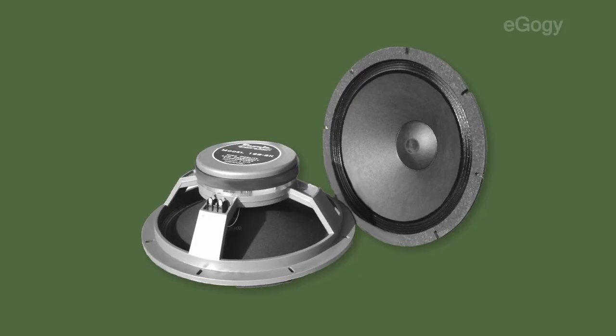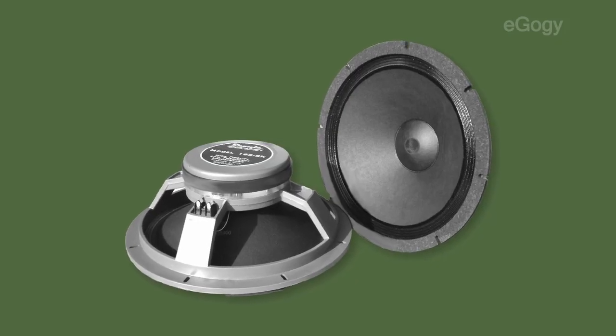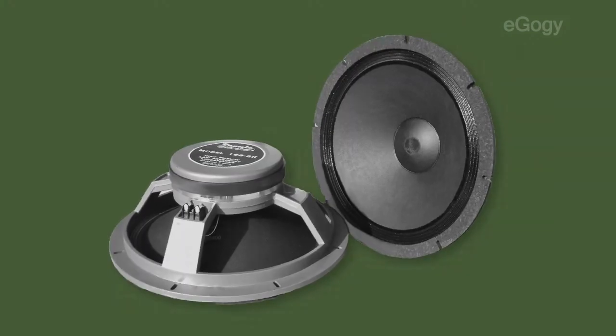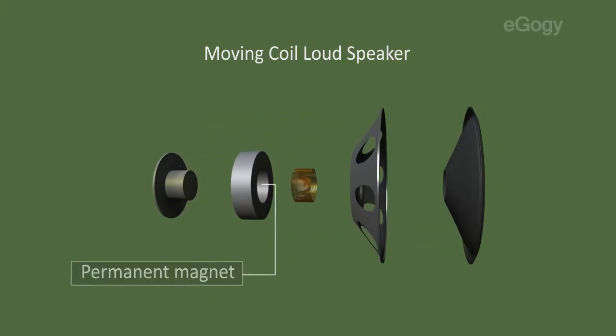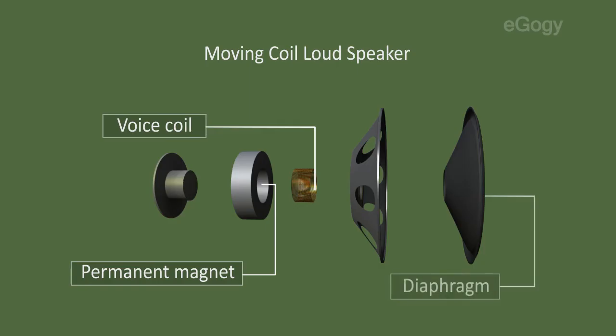The structure of the Moving Coil Loudspeaker is same as that of the microphone. The important parts of a loudspeaker are the permanent magnet, voice coil, and diaphragm.